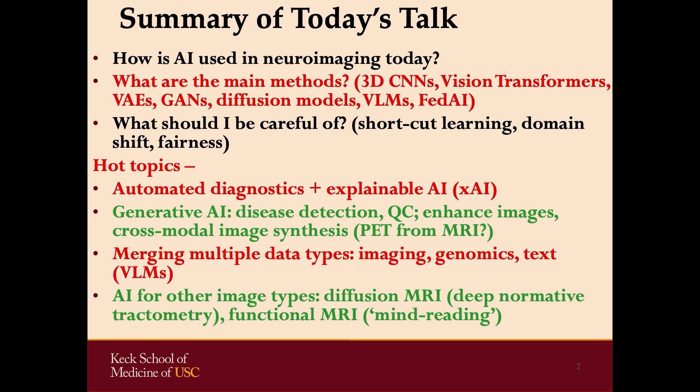We'll talk not just about the methods but what to be careful of — issues with training models that then don't work. We'll talk about how to avoid domain shift issues and fairness, meaning methods should work well for everyone, not just a subclass of data. Hot topics include automatic diagnostics, explainable AI, generative AI, merging multiple data types like imaging, genomics, and text, vision language models, and adapting AI for other neuroimaging modalities like diffusion tractometry and resting state.